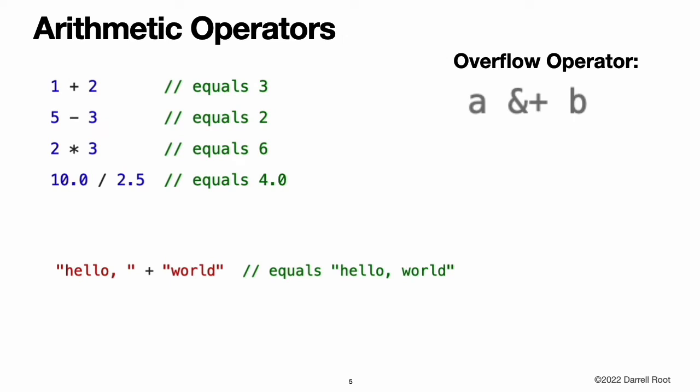Swift supports the four standard arithmetic operators for all number types: addition, subtraction, multiplication, and division. Unlike the arithmetic operators in C and Objective-C, the Swift arithmetic operators do not allow values to overflow by default. You can opt into value overflow behavior by using Swift's overflow operators such as a &+ b.